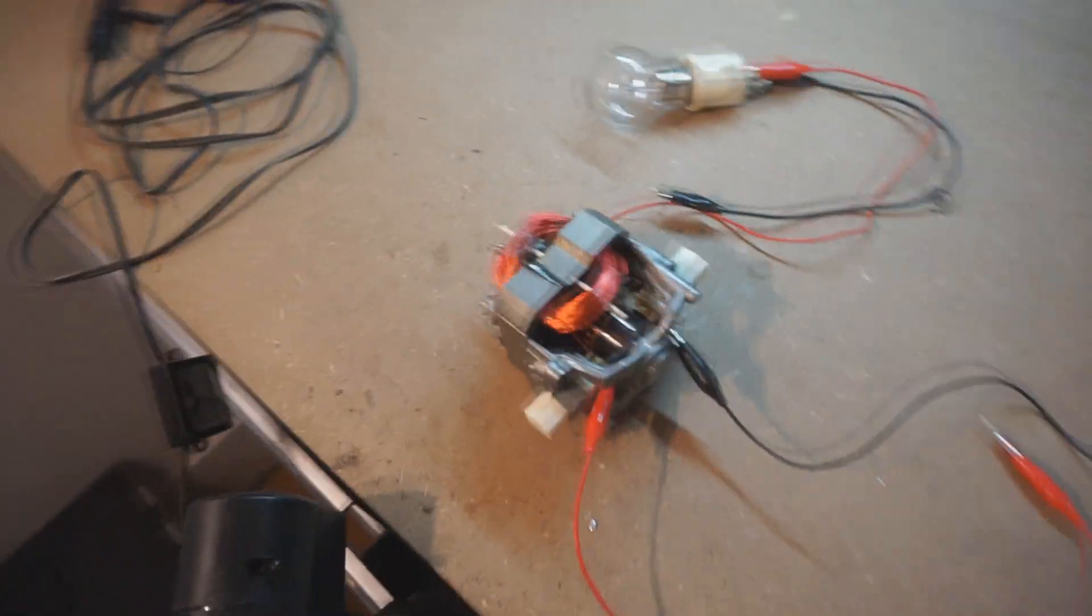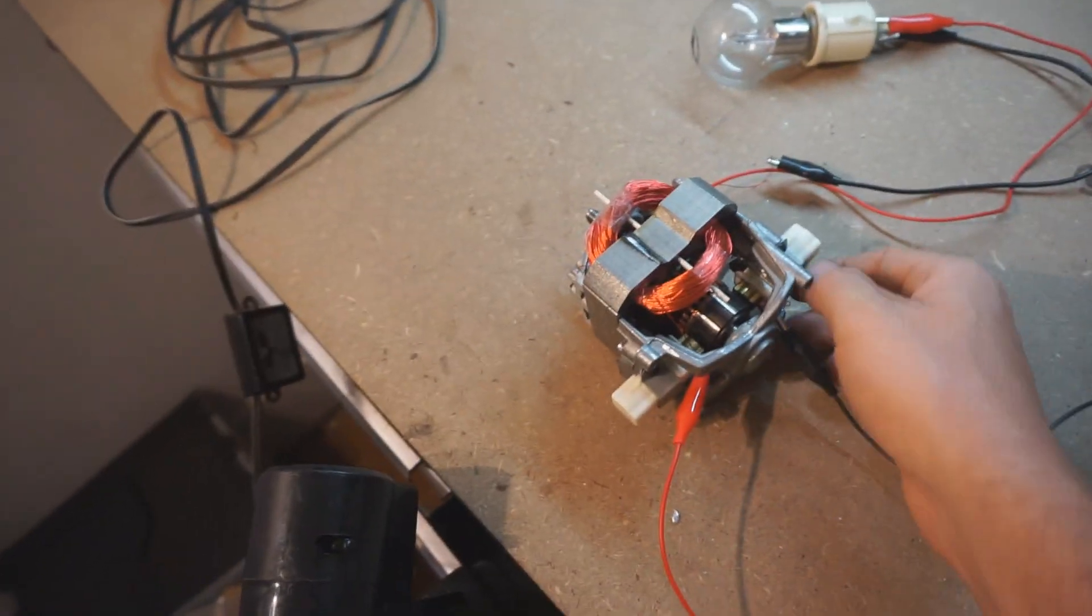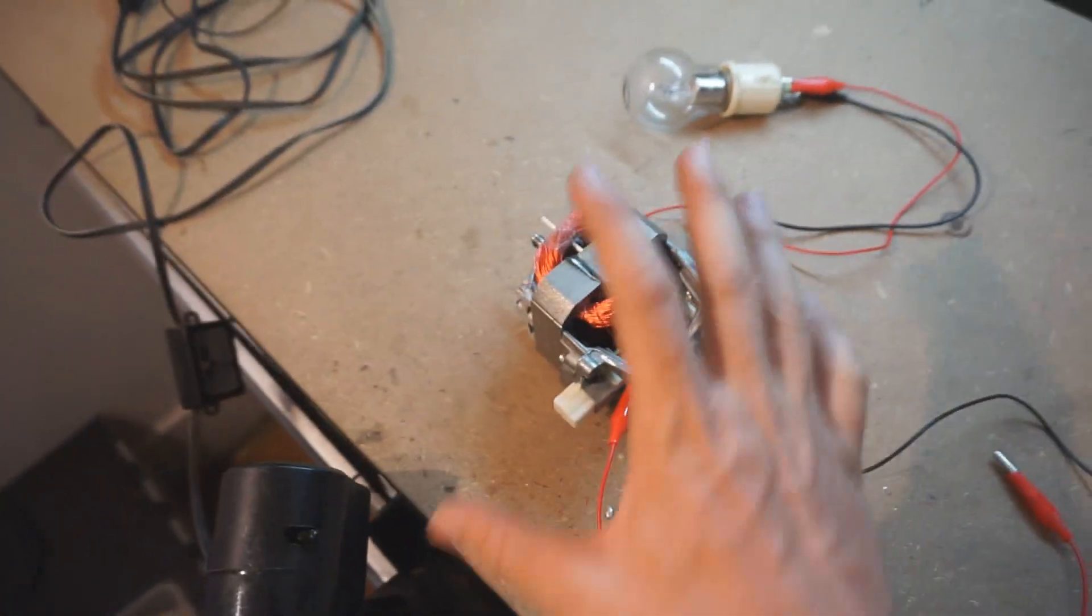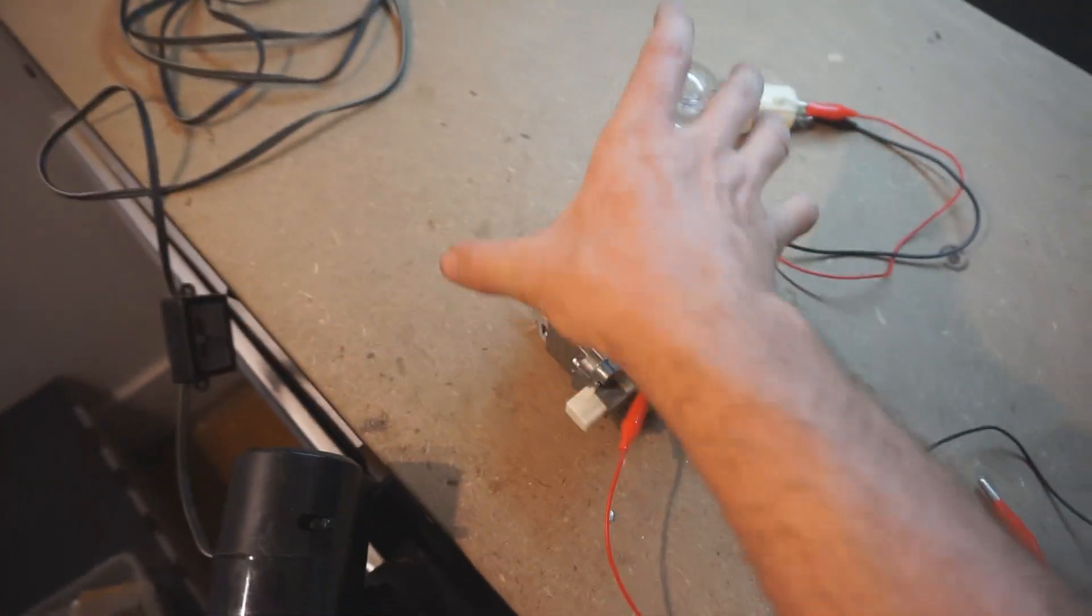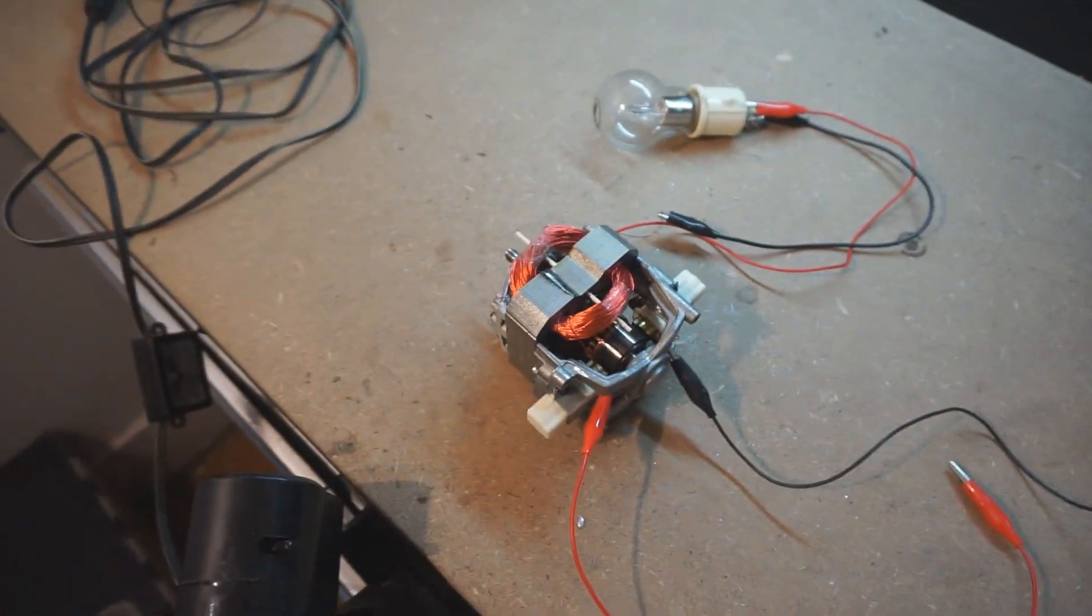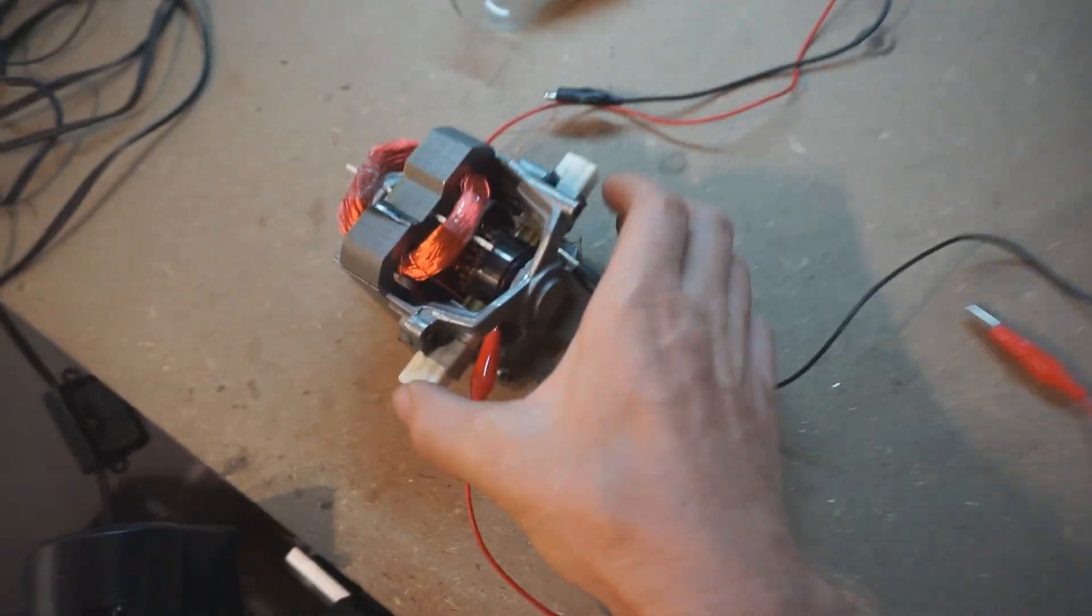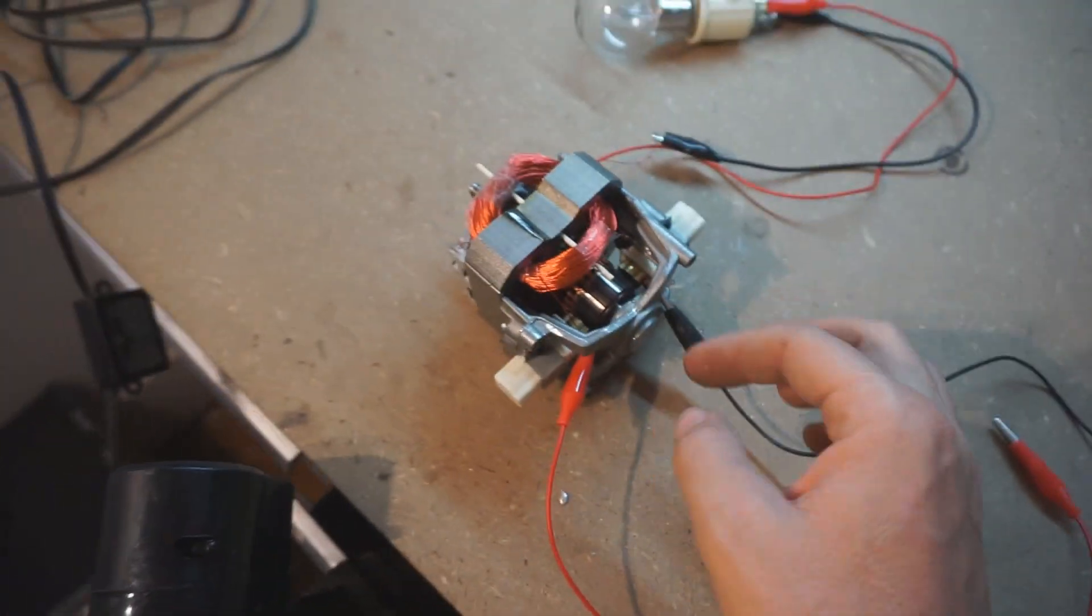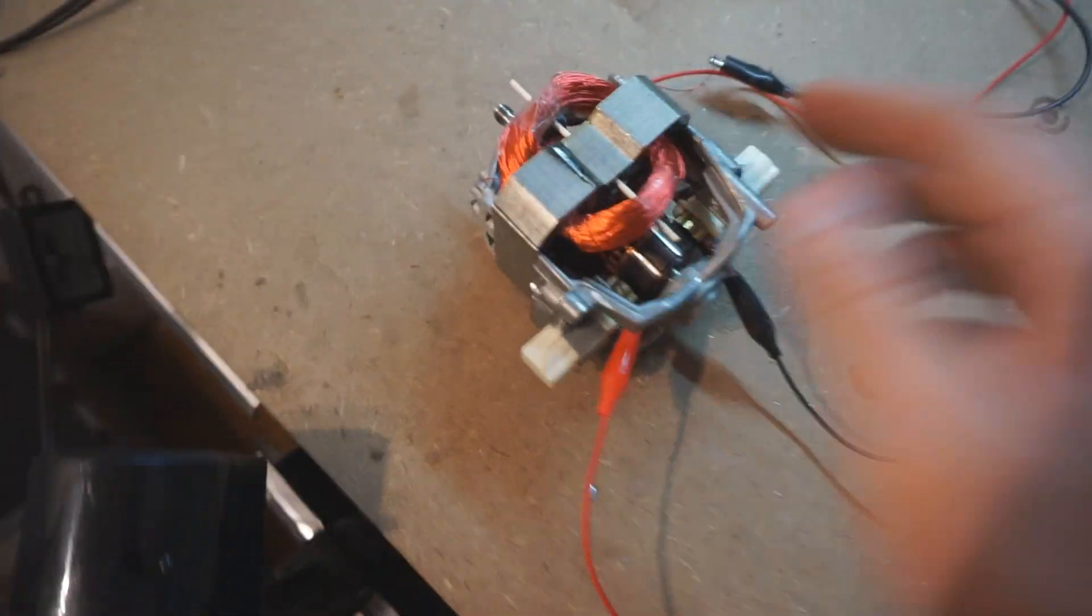I decided to join the fun. I ordered one of these vacuum cleaner motors off eBay and I tore it all apart. It had a rotor and an encasement. I've taken all that out and I've got down to just the essential part here which is the motor.